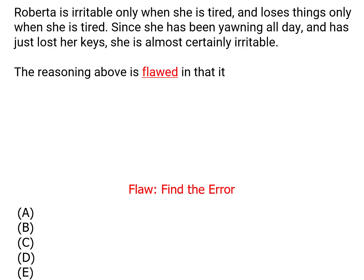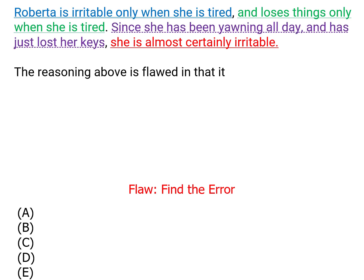Of course that means understanding what the argument says — its conclusion and its evidence. The conclusion of this argument comes at the end: Roberta is almost certainly irritable. The evidence given is that Roberta is irritable only when she's tired and she loses things only when she's tired — two things she only does when she's tired. Then we're informed that she's been yawning all day and she just lost her keys.